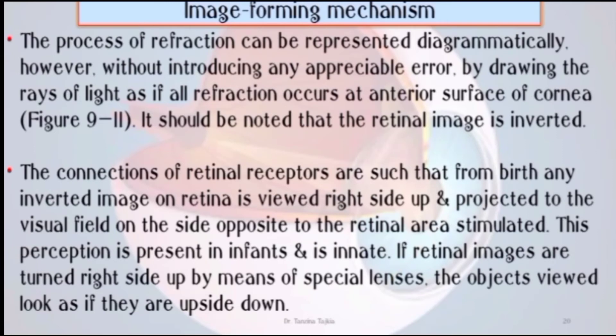The process of refraction can be represented accurately by drawing rays of light as if all refraction occurs at the anterior surface of the cornea. The connections of retinal receptors are such that from birth, any inverted image on the retina is perceived right-side up and projected to the visual field on the side opposite to the retinal area stimulated.